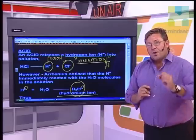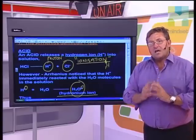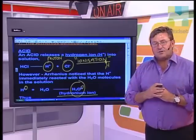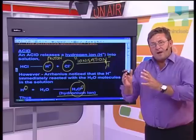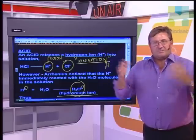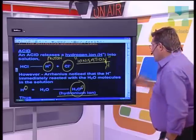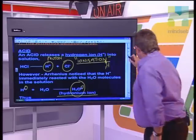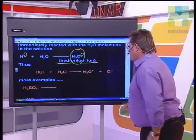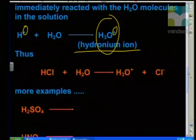So when acids dissolve in water, according to Arrhenius, we produce hydronium ions in the solution. The hydronium ion is equivalent to the hydrogen ion in all seriousness. So that is now Arrhenius' understanding of what an acid actually is.